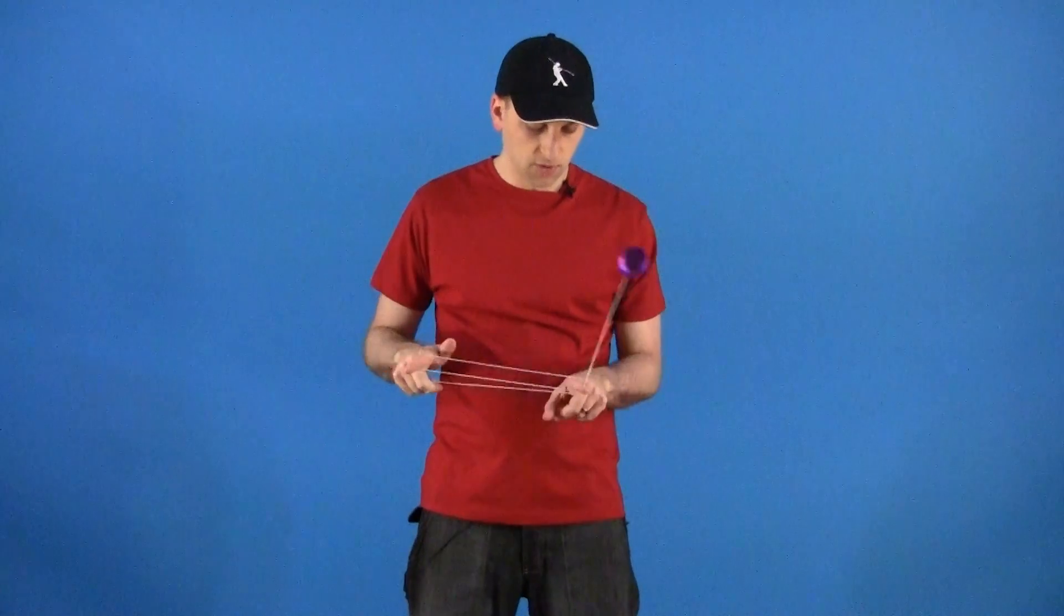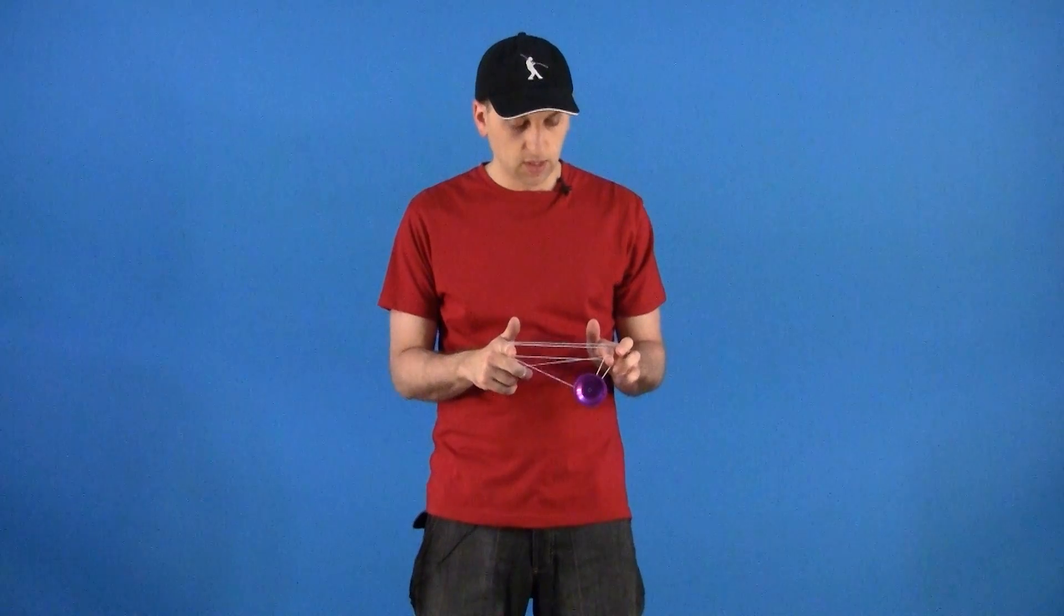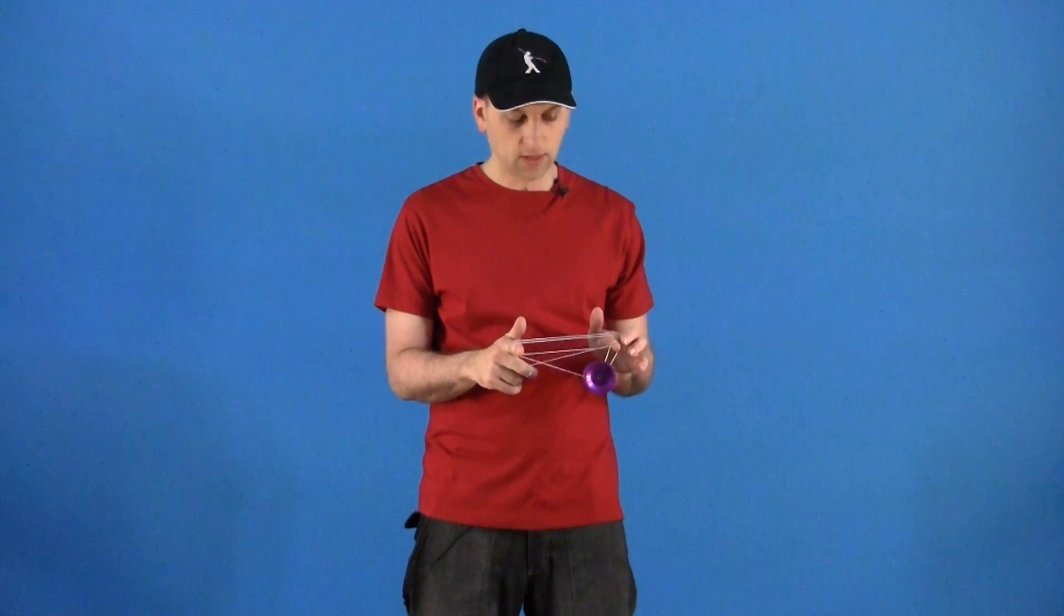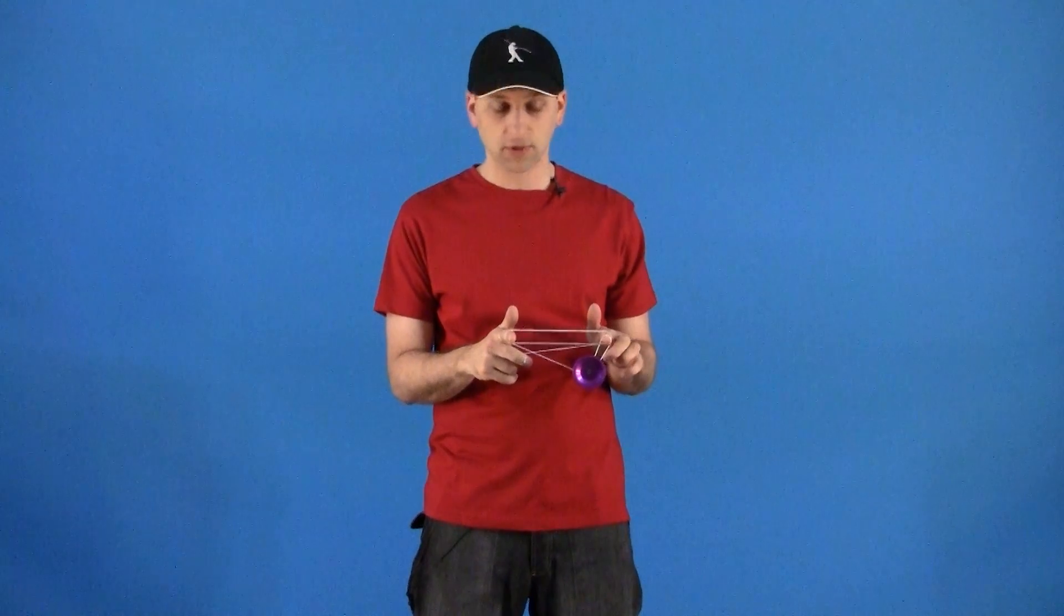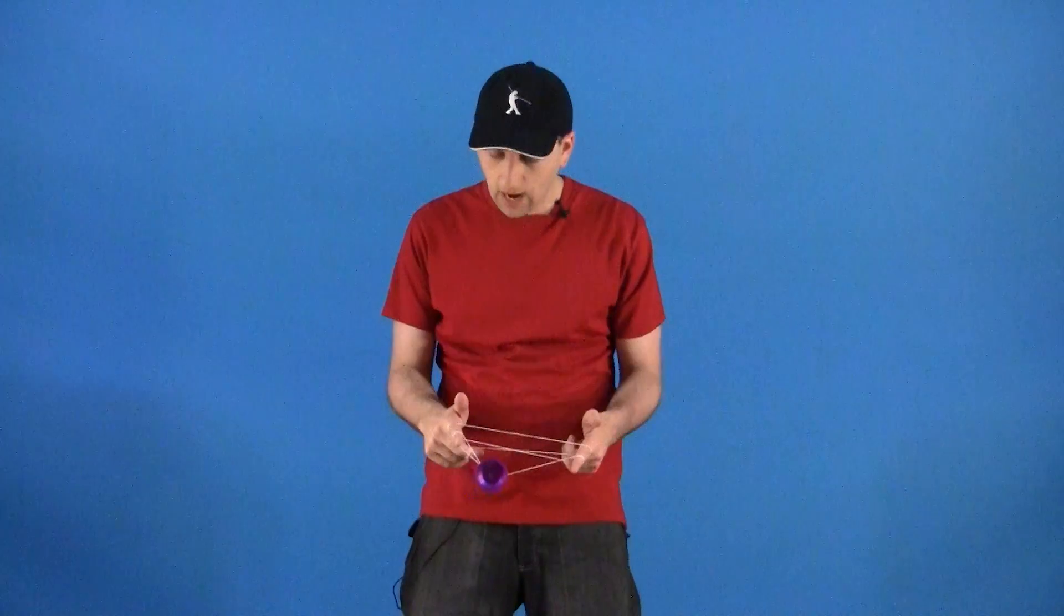Once you have the yoyo into your triple or nothing, what I like to do is hop the yoyo side to side. As you jump the yoyo up, you are going to let the string off of the finger that is closest to the yoyo and then you are going to hop the yoyo off to the opposite side a little bit.